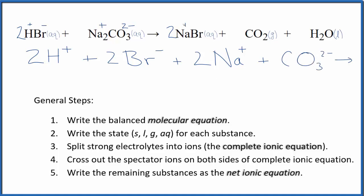For the products, we said sodium's positive, bromine is negative. So two sodium ions, again, just like the reactants, plus two bromide ions. And then for net ionic equations, we don't split gases or liquids apart. So we'll just have CO2 plus H2O. So this is the complete ionic equation.